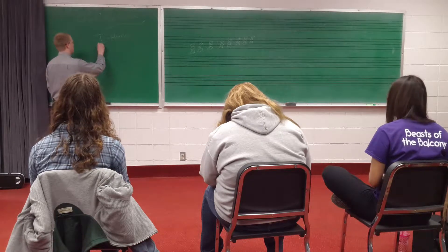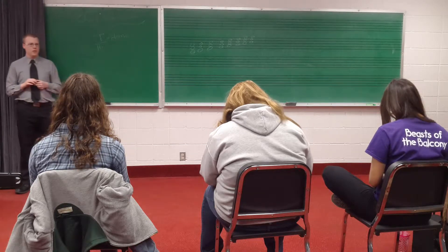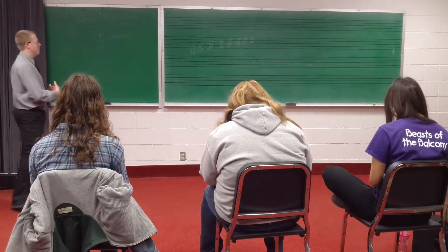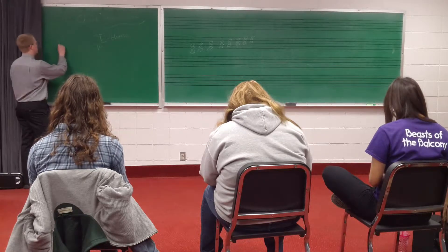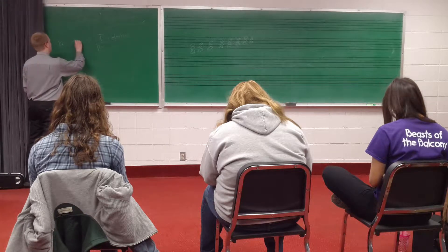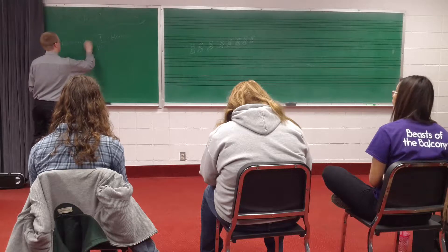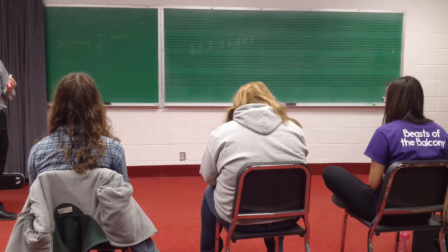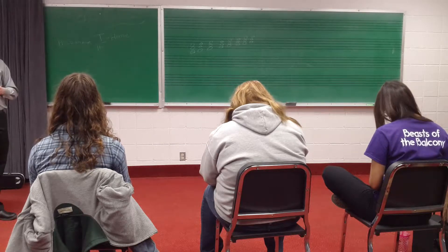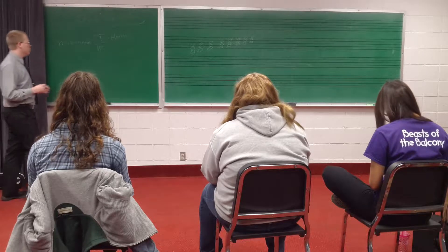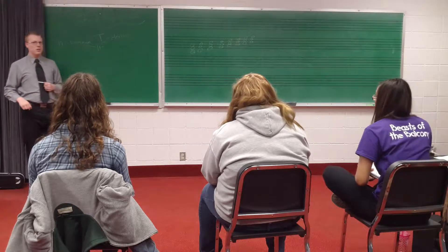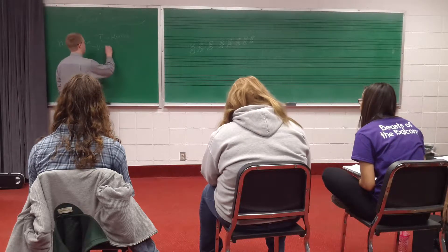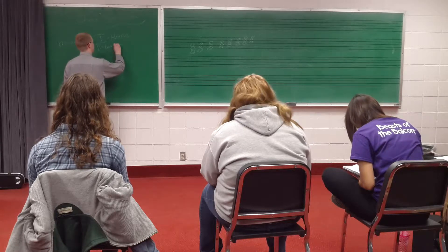Moving on to our two chord, which is minor in a major key. Our two chord is our first chord that we're going to call a pre-dominant chord. Now this isn't like predominant meaning it happens a lot — it's pre-dominant. What is the dominant? It's the five chord. So the two chord, being a pre-dominant chord, comes before the five. The two chord wants to go to the five.